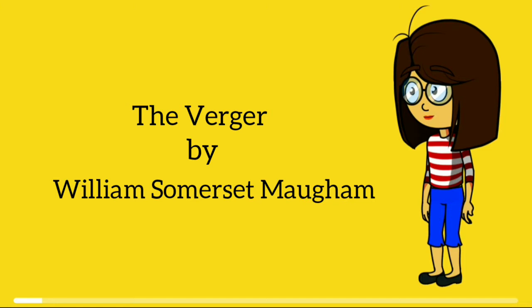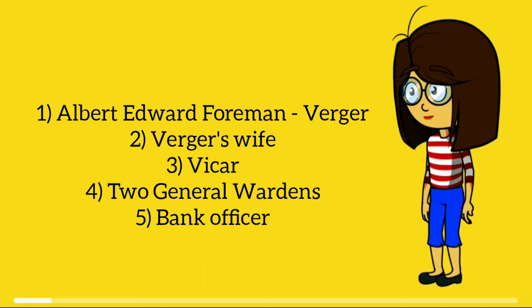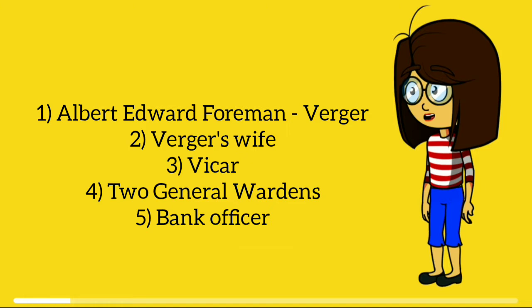The characters involved in this short story were Albert Edward Foman, who is a Vajah — a church officer who takes care of the interior building and acts as an attendant during religious ceremonies in a church. Next, Virgil's wife, Vicar, and two general wardens, who are the higher officers working in a church. And finally, the bank officer.